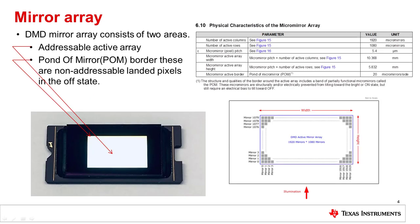The DMD mirror array is composed of active addressable mirrors that rotate from on-state to off-state. For the sample DLP 4710 DMD shown, the tilt angle is plus or minus 17 degrees. There is a border of non-addressable mirrors surrounding the active array called the Pond of Mirrors, or POM. They are landed in the off-state to provide a black transition border to the active array.